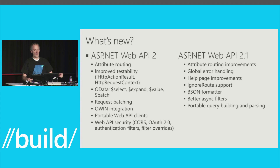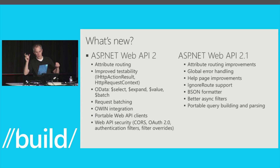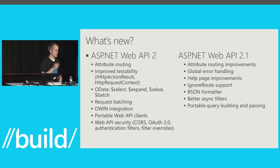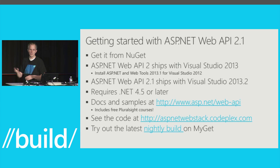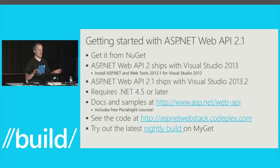We also have portable client support in Web API for calling Web APIs, with helpers over the HTTP client for serialization and deserialization of JSON or whatever format you have. We've done a lot of work on security — OAuth 2, support for CORS, authentication filters. You already have those bits in VS 2013. We produce signed nightly builds available on MyGet if you don't want to wait for an official release. Everything we do is on NuGet. If you've got VS 2013, you've got Web API 2. Web API 2.1 is shipping with Update 2.